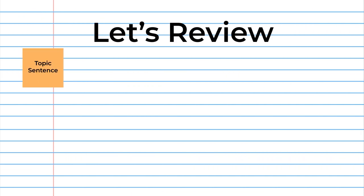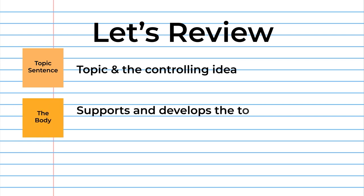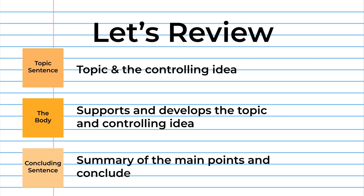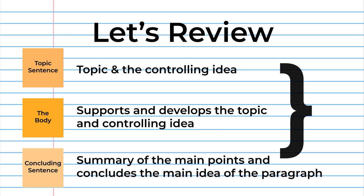Let's do a quick review. The topic sentence contains the topic and the controlling idea. The body supports and develops the topic and controlling idea. The concluding sentence is a summary of the main points and concludes the main idea of the paragraph. All three of these components make up a properly structured paragraph. Congratulations! You are now able to write a properly structured paragraph.